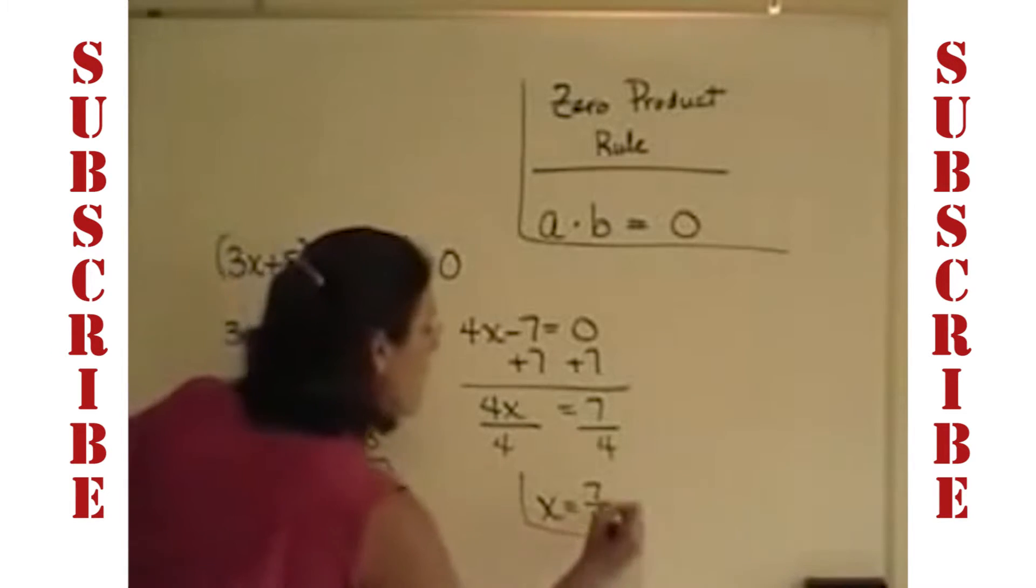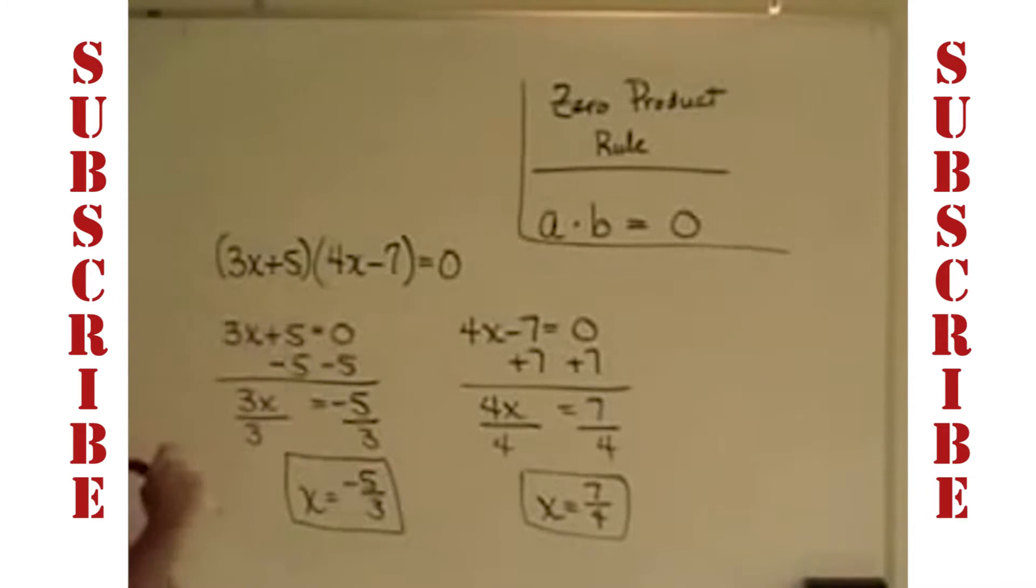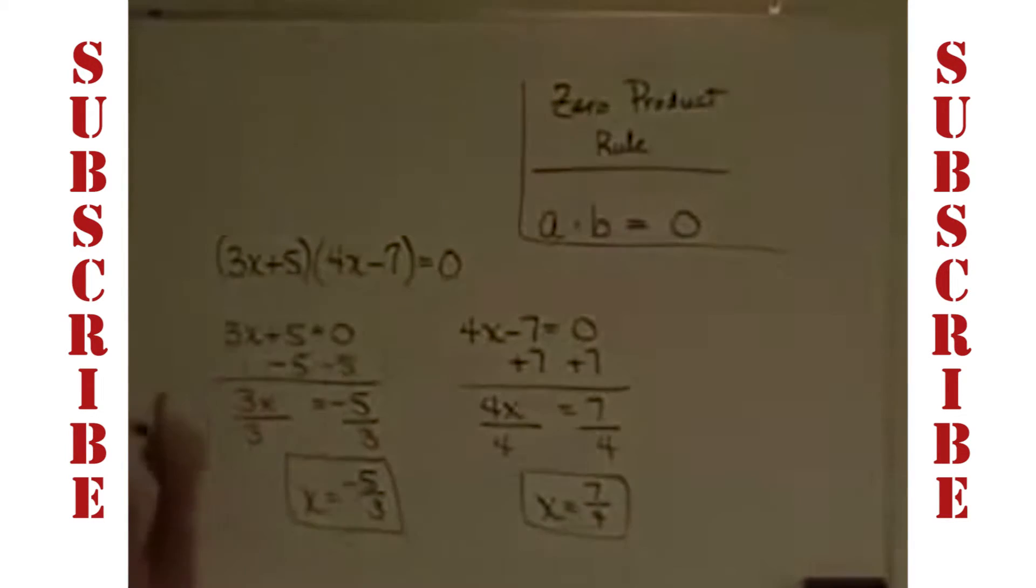Again, x equals negative 5 thirds and x equals 7 fourths are the two solutions to this equation that will make it equal.